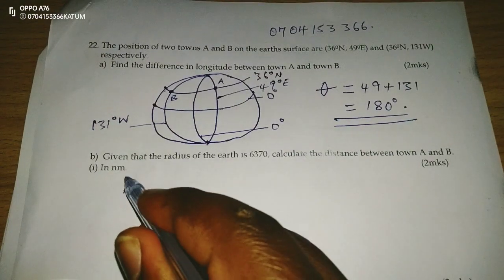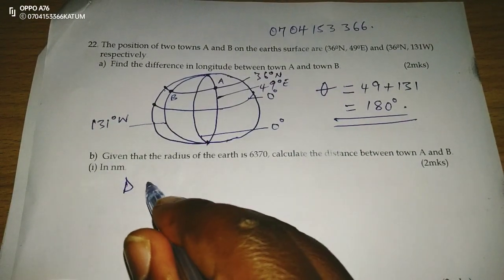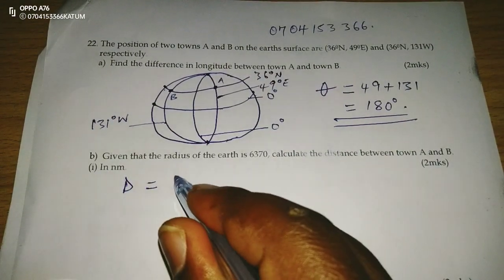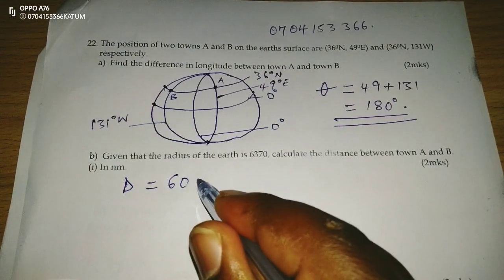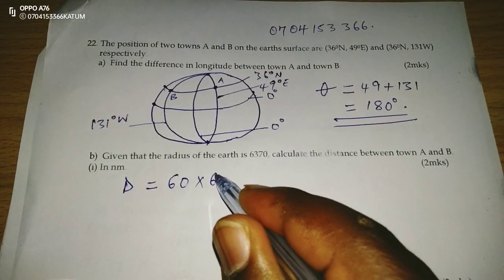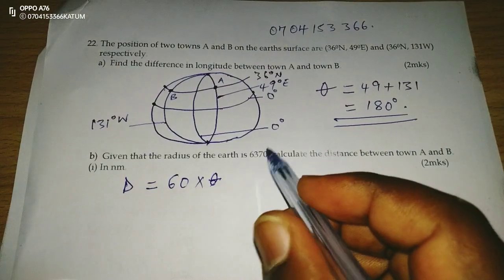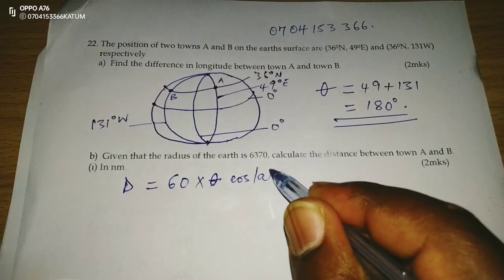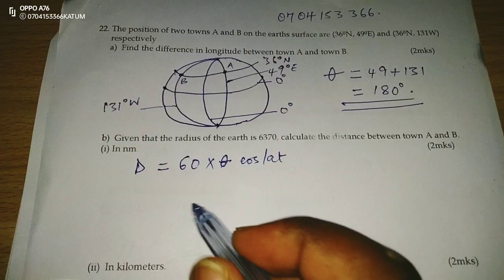Distance on a small circle in nautical miles is given by 60 multiplied by theta, 60 times theta, cosine of the latitude where the two places are.